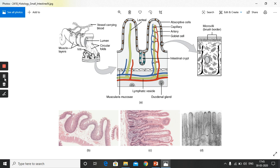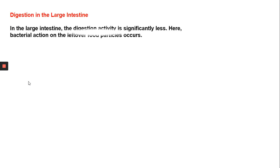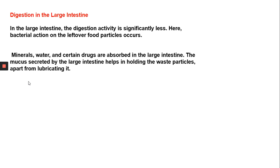Now, what happens to the undigested food left over in the small intestine? It comes to the large intestine. In the large intestine, digestion activity is significantly less. Bacterial action occurs on the leftover food particles, and the enzymes are not present in the large intestine to act on this remaining food.